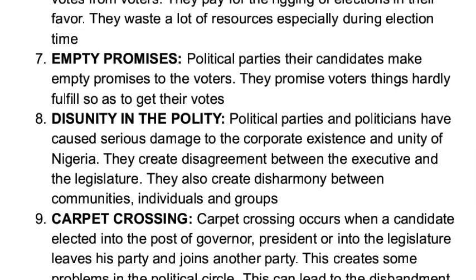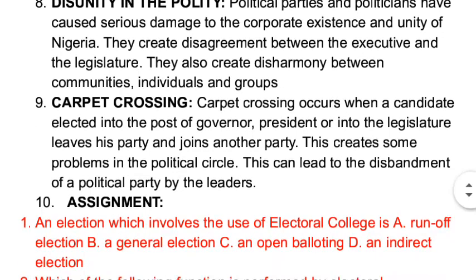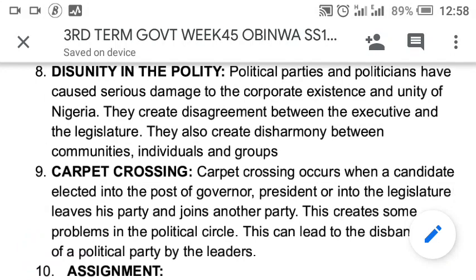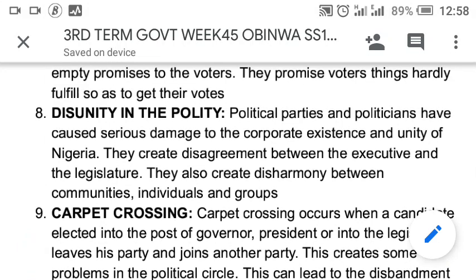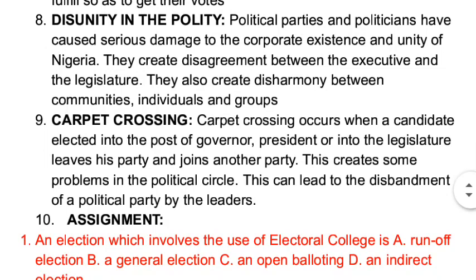Number eight is disunity — there will always be disunity in the country because each political party is trying to gain power. The last one is carpet crossing. Carpet crossing occurs when a candidate elected into the post of governor, president, or into the legislature leaves their party and joins another party, creating problems in the political cycle.